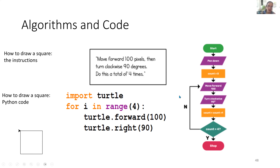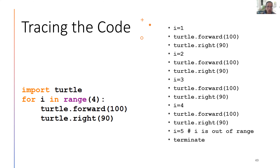We can trace through the code: i starts at 1, we do turtle.forward(100) and turtle.right(90), then the for loop increments i to 2, and we repeat. After i equals 4 and we complete the bottom of the loop, we ask if i is within range(4) — it is now 5, so it's out of range and the loop terminates. That is how we write code using a for loop to make a square.